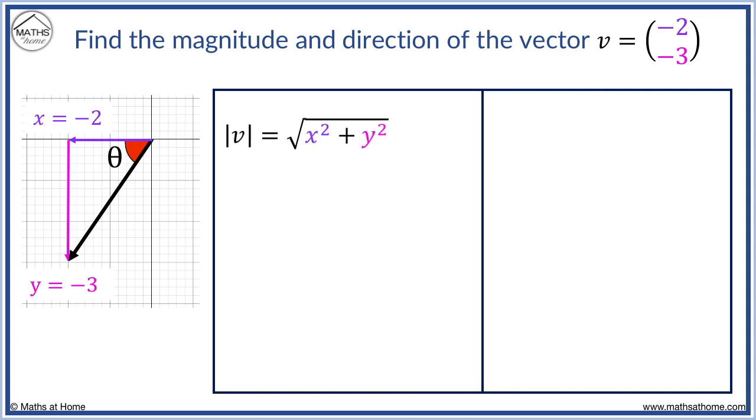We substitute x equals -2 and y equals -3 into the magnitude equation. -2 squared equals 4 and -3 squared equals 9. 4 plus 9 equals 13 and so the magnitude equals square root of 13.